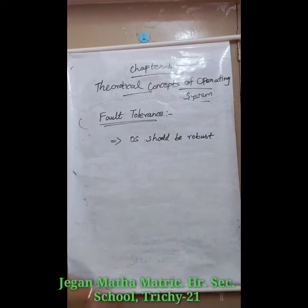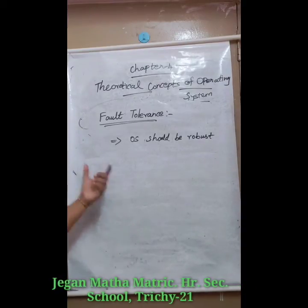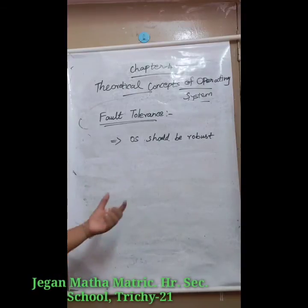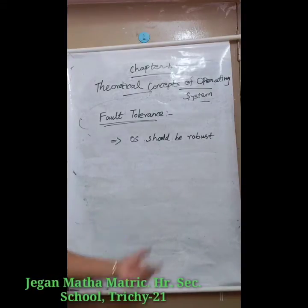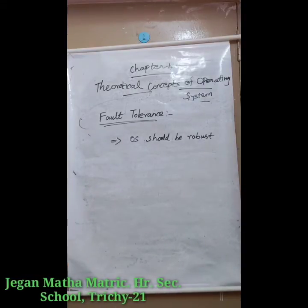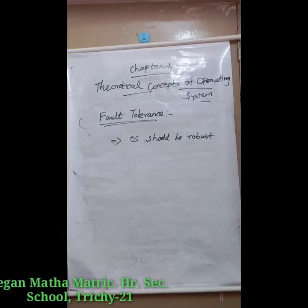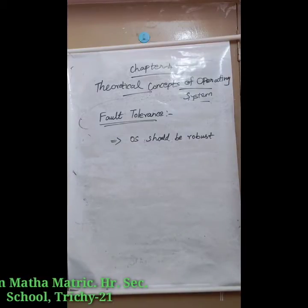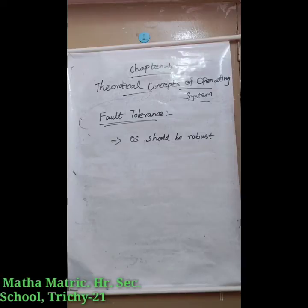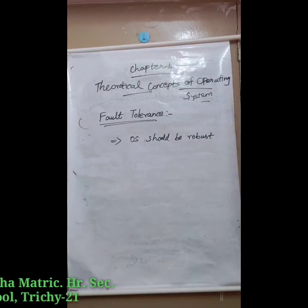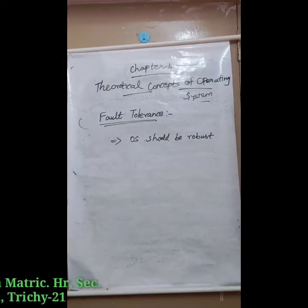Next is fault tolerance. The operating system should be robust — meaning strong. When there is a fault, the operating system should not crash. Instead, the operating system should have fault tolerance capability and retain the existing state of the system. This is fault tolerance.